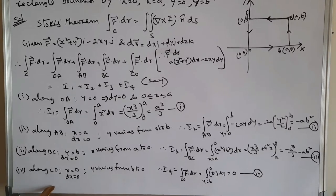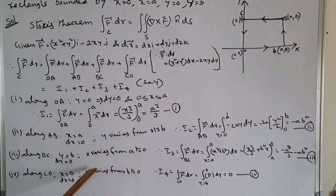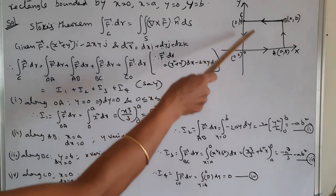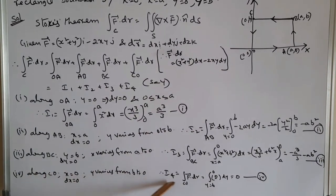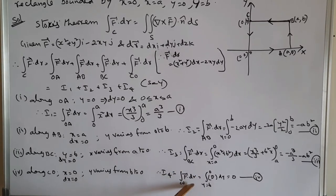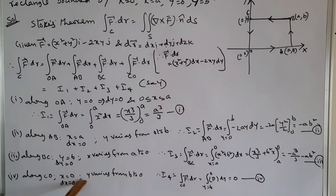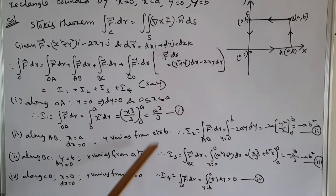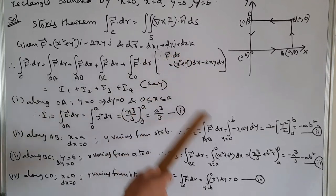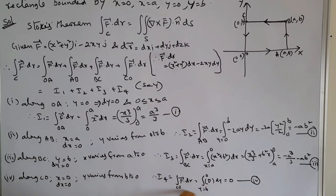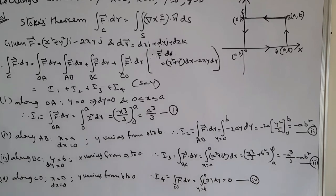Along CO, x = 0, so dx = 0, and y varies from b to 0. Therefore I4 = integral of F̄ · dr̄ over CO. Since x = 0 and dx = 0, the complete F̄ · dr̄ = 0 only. So I4 = 0. Consider this as equation (IV).